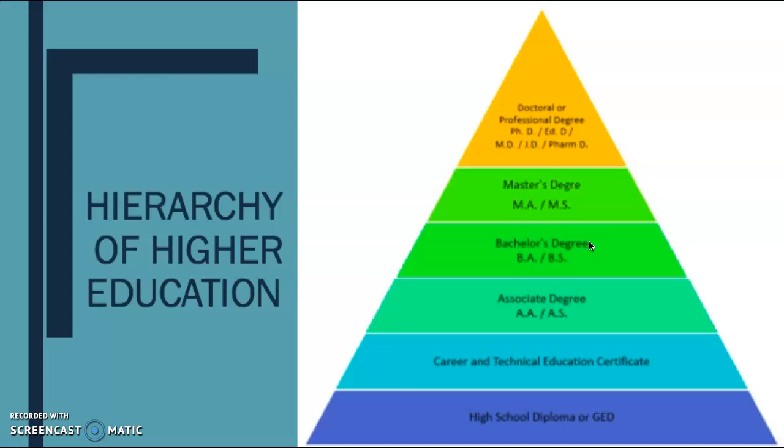Now we're going to move to the bachelor's degree. Bachelor's degrees typically take about four years. And you're able to receive bachelor's degrees from Cal States or California State Universities, UCs or University of California, and private schools, both in and out of state. Bachelor's degrees, as I mentioned, take about four years.